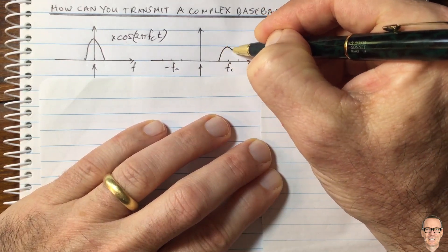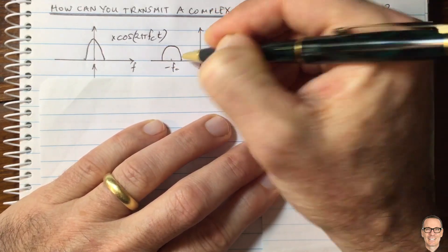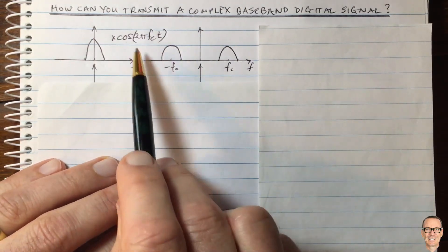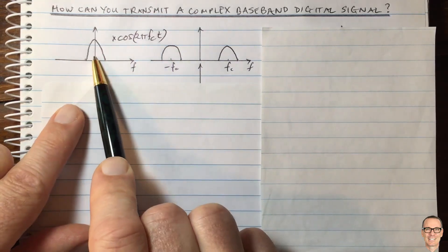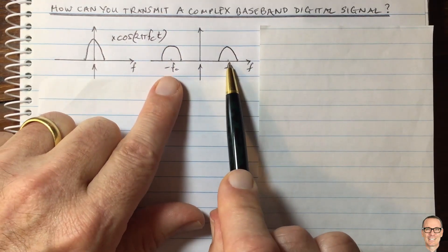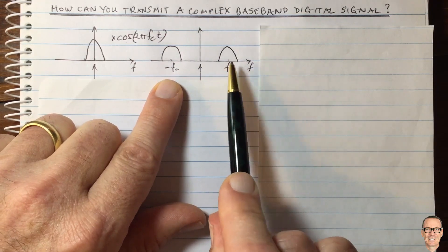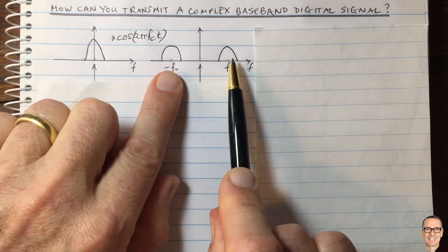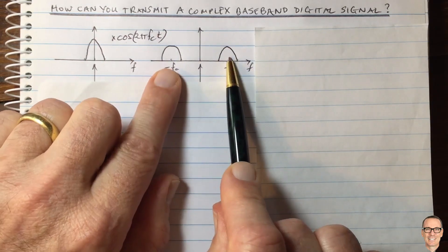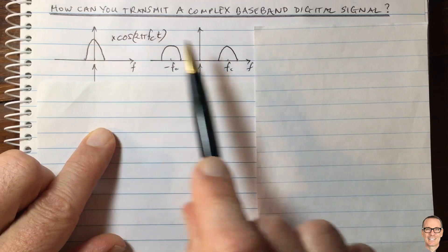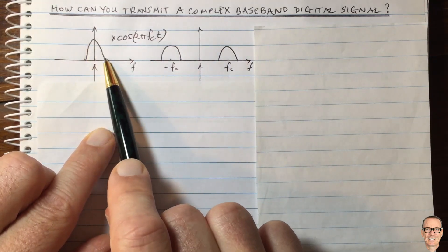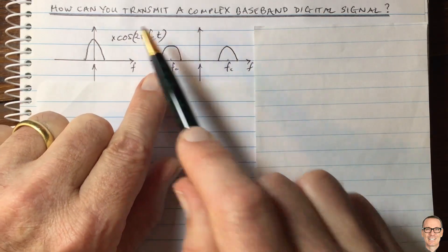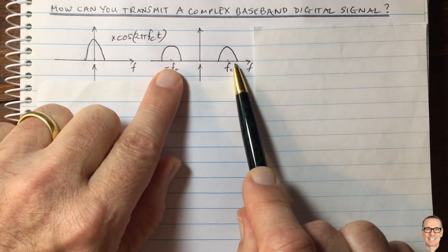Here we have the effect of having multiplied in the time domain by a carrier waveform. This is the most basic amplitude modulation — we take a baseband signal and turn it into a passband signal that can oscillate in an antenna at that frequency. This is also a real signal because we can see it is complex conjugate symmetric. So if it's real at the baseband, when you multiply by cosine, it's real at the passband.